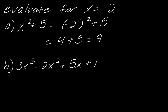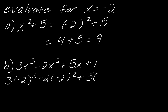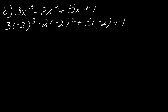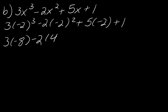For this other example, if I plug in negative 2, I have 3 times negative 2 cubed, minus 2 times negative 2 squared, plus 5 times negative 2, plus 1. Using the order of operations, negative 2 to the third is negative 8, so this will be 3 times negative 8. And negative 2 squared — negative 2 times negative 2 — will be positive 4. So 5 times negative 2 is negative 10, and then plus 1.